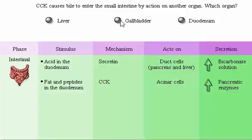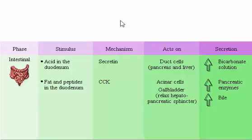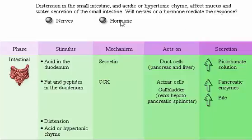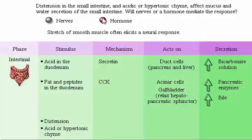CCK causes bile to enter the small intestine by action on another organ — the gallbladder. Distension of the small intestine and acidic or hypertonic chyme affect mucus and water secretion of the small intestine. Stretch of smooth muscle often elicits a neural response, so nerves mediate the response.